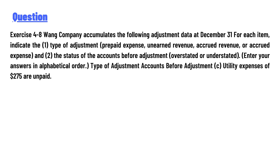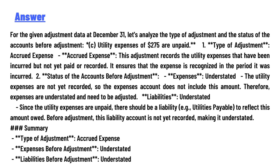For the given adjustment data at December 31, let's analyze the type of adjustment and the status of the accounts before the adjustment. Item (c): utility expenses of $275 are unpaid. The type of adjustment is accrued expense. This adjustment covers utility expenses that have been incurred but not yet paid or recorded, ensuring the expense is recognized in the period it was incurred.